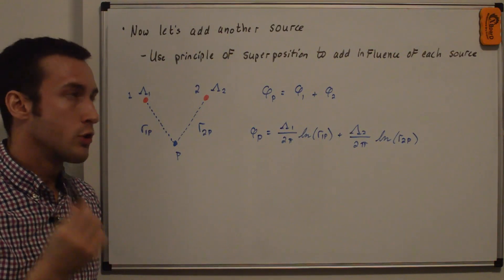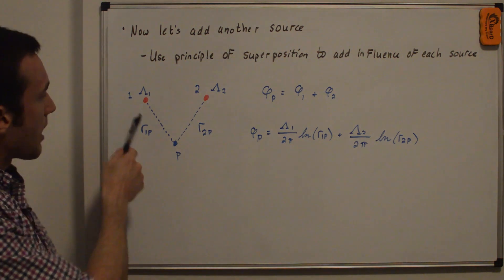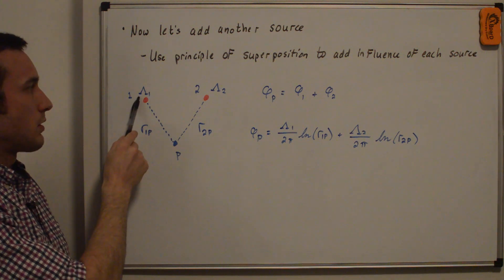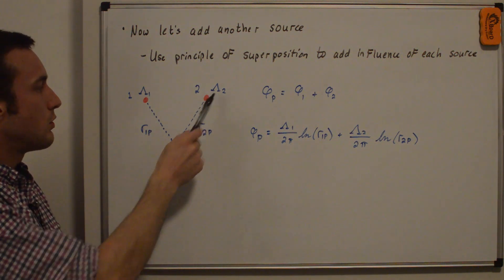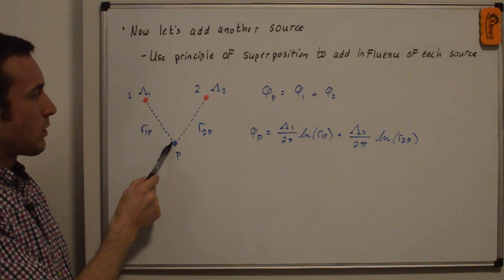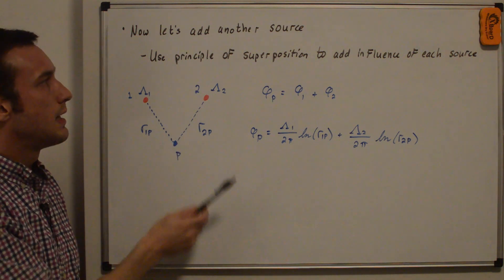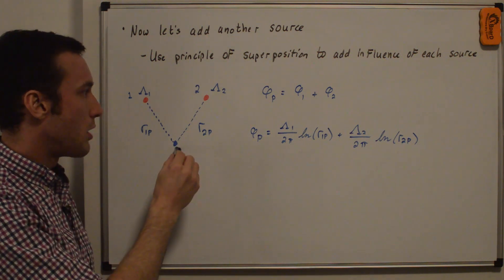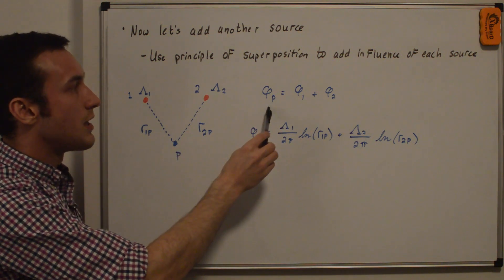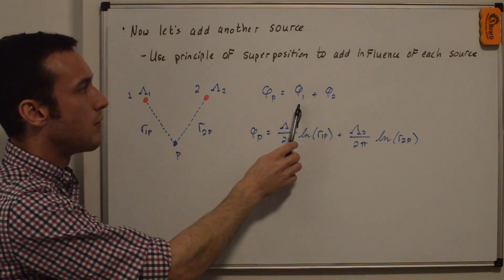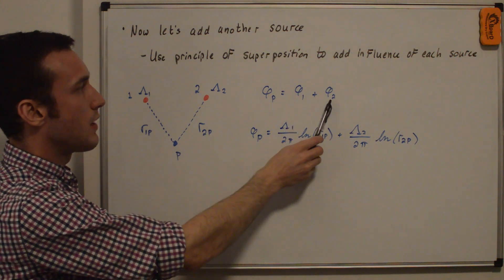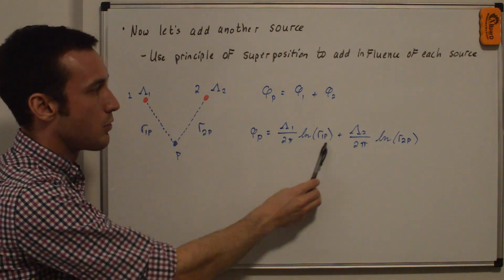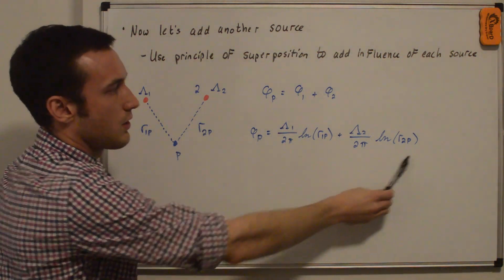Now we're just going to add one more source. In the schematic, you can see again point P, source one and source two, with source strengths lambda_1 and lambda_2, and distances r_1P and r_2P respectively. We're going to use the principle of superposition to add the influence of each source on point P. So the velocity potential at point P is due to the sum of the first source and the second source, written simply as the first source term plus the second source term.